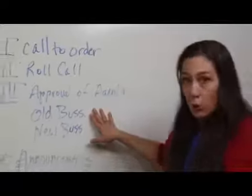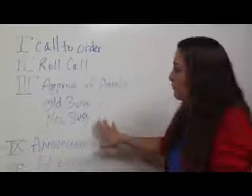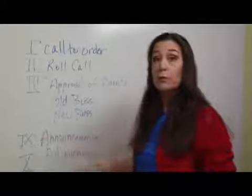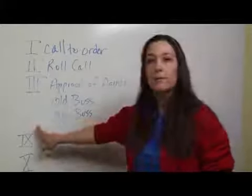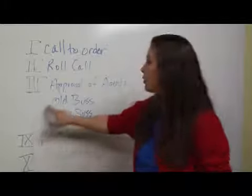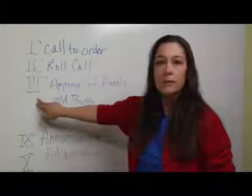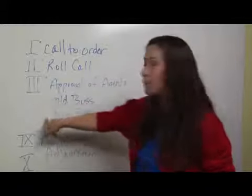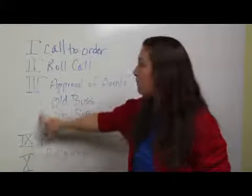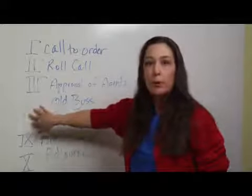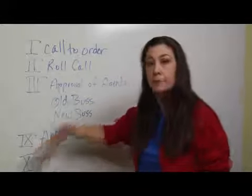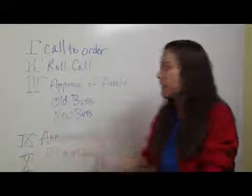Then we're going to have the old business first, followed by new business. Now these will be broken down in Roman numerals as well. I didn't write them, because I don't know how many Roman numerals you need. Your old business might take up four, five, six, seven, eight. Your new business might take up nine, ten, eleven, twelve, thirteen — however many, that's what you put in there. So you might not get all the way down to nine and ten, but that's just to give you an example.